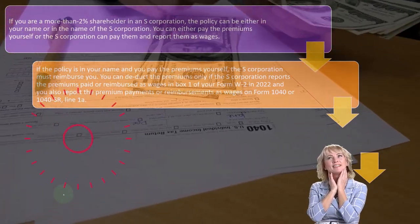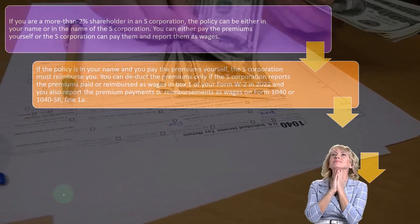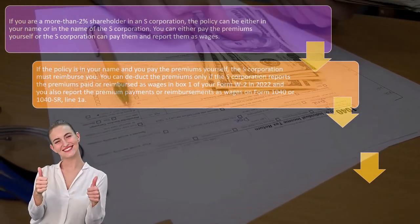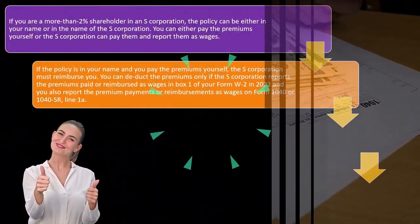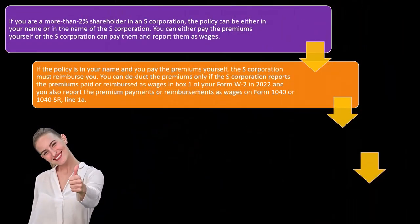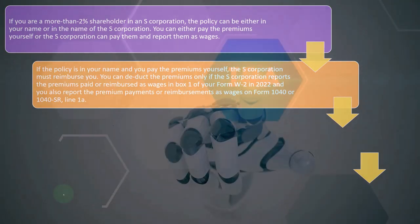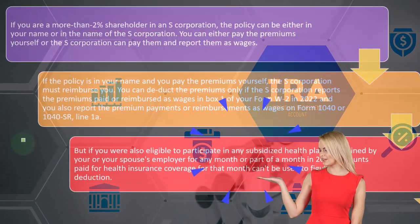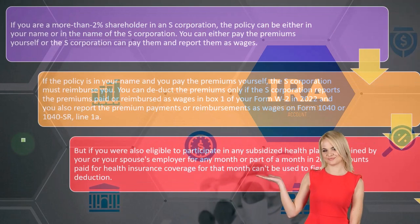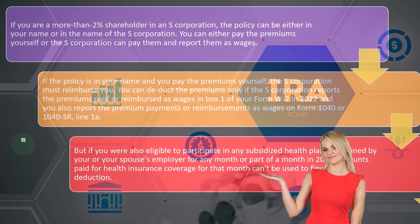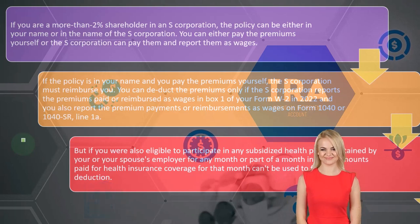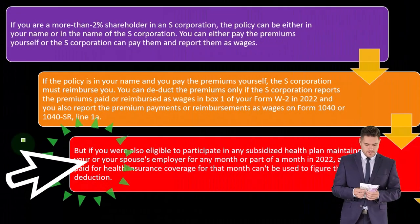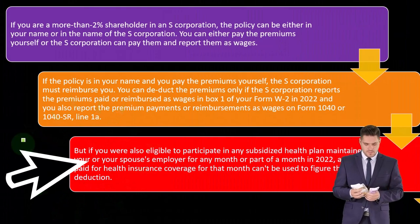The S corporation flow-through income flows to your Form 1040, but that flow-through amount isn't subject to self-employment tax. The IRS therefore forces you to treat yourself as an employee of your S corporation. Even if you're the sole owner, you still have to pay yourself an appropriate amount of wages, because that's how the IRS collects Social Security and Medicare. That's where it gets a bit messy — you have wages paid plus the flow-through of excess income going to the 1040.